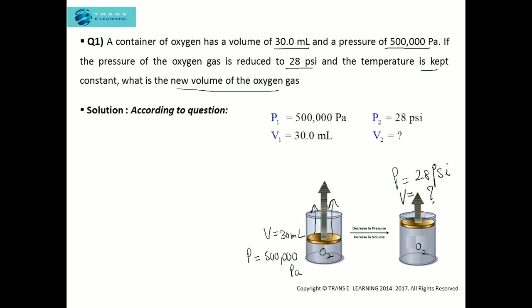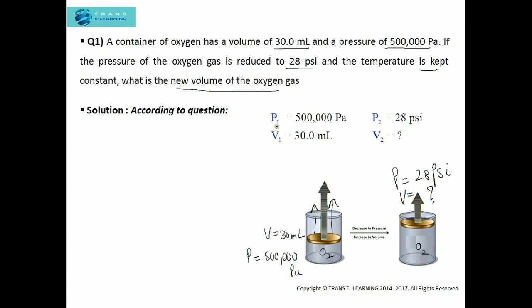We will analyze what is given and what needs to be found. Pressure 1 is 500,000 Pa and Volume 1 is 30 milliliters. Pressure 2, the decreased pressure, is 28 PSI, and Volume 2 is what we need to find. The second thing to check is units — the units here are different, so we need to convert them into a common unit.